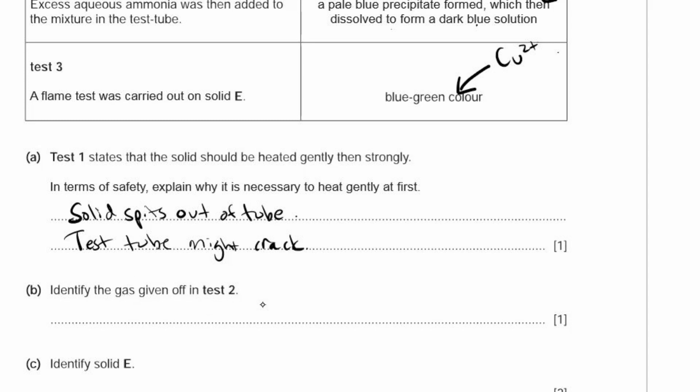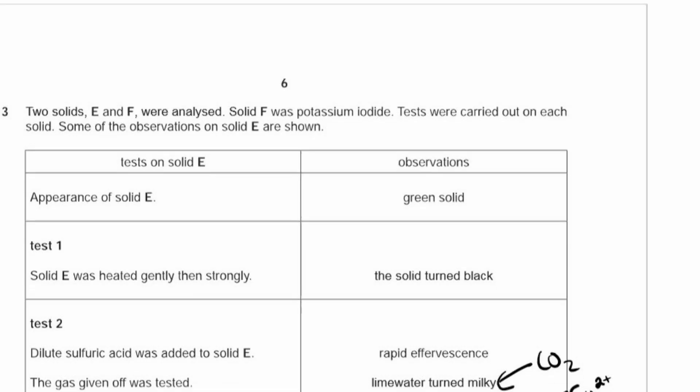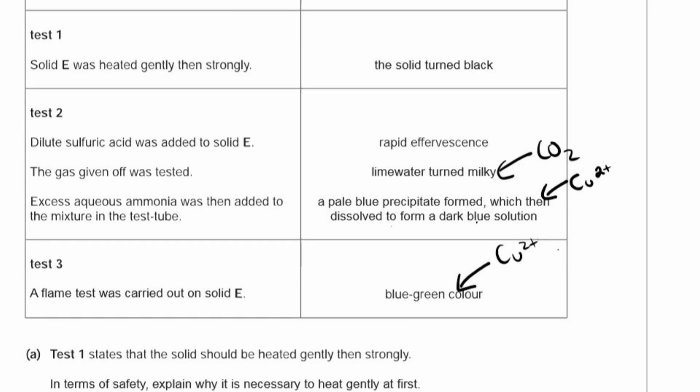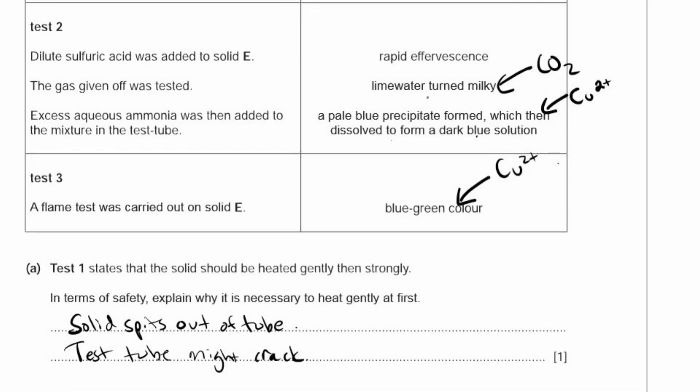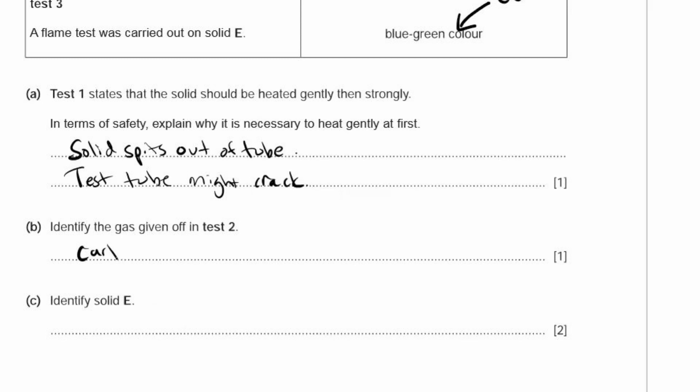B. Identify the gas given off in test 2. The gas given off is the lime water test, and lime water turns milky. That's the test for carbon dioxide. C. Identify solid E. We had carbon dioxide given off, and we had copper. So the solid has to be copper carbonate.